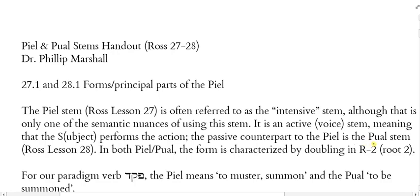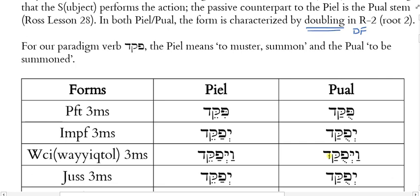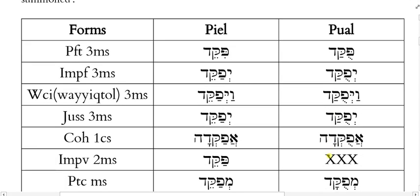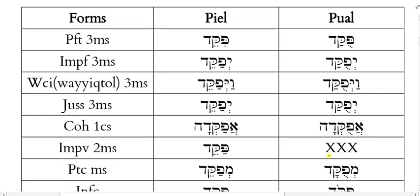The passive counterpart to the Piel is the Pual stem. In the Pual, the subject is not performing the action; rather, some action is being performed on the subject. The subject is the patient — it is not doing anything, rather someone's doing something to it. So whatever the verb means in the Piel, in the Pual it means the same thing, only passive — just like the Qal and Nifal distinction. In both the Piel and the Pual, the form is characterized by doubling in root 2, so we look for a Dagesh Forte in root 2.